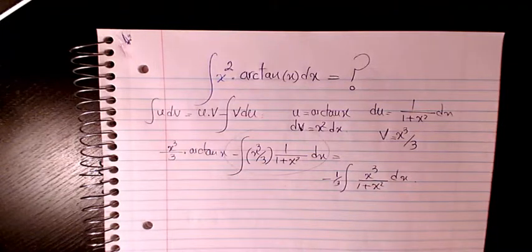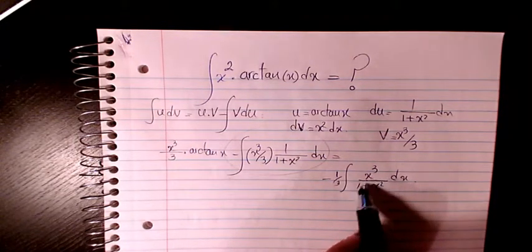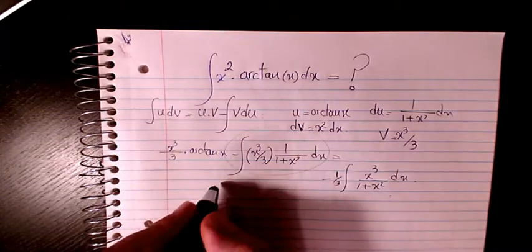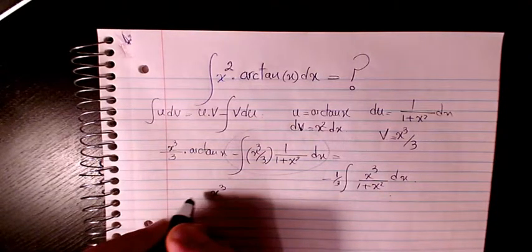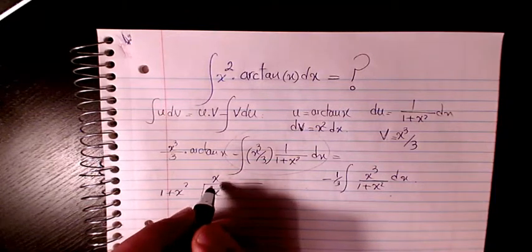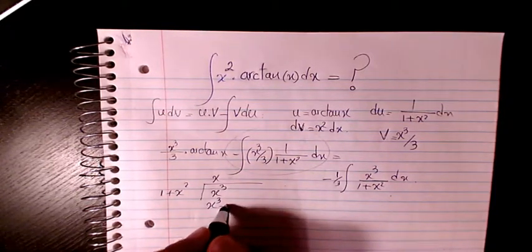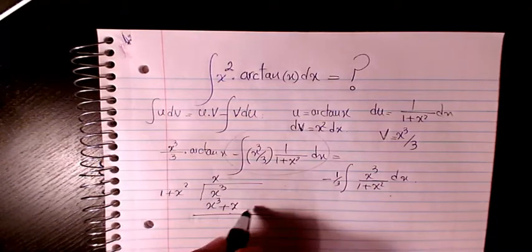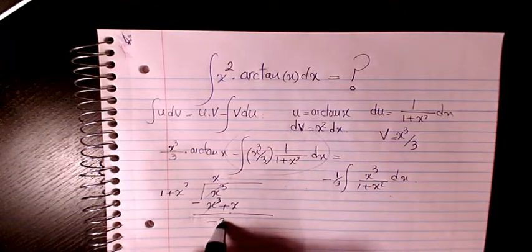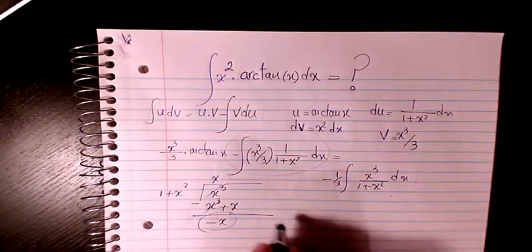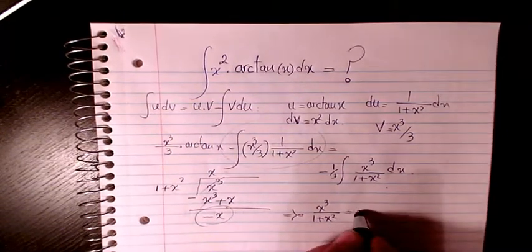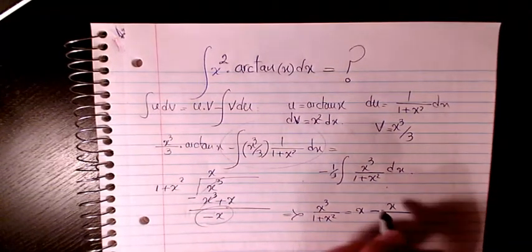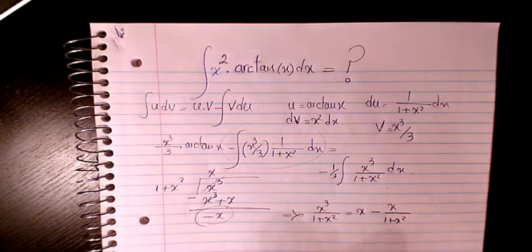Now I can divide x cubed by (1 plus x squared) using polynomial long division. I have x cubed divided by (1 plus x squared). The result is x, since x times (x squared plus 1) gives x cubed plus x. Subtracting, the remainder is negative x. So x cubed divided by (1 plus x squared) equals x minus x over (1 plus x squared).